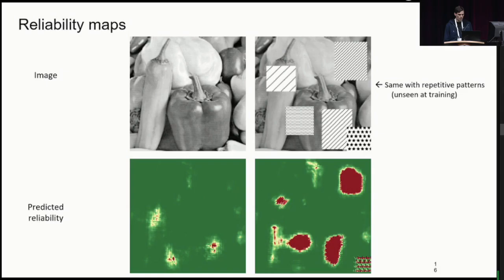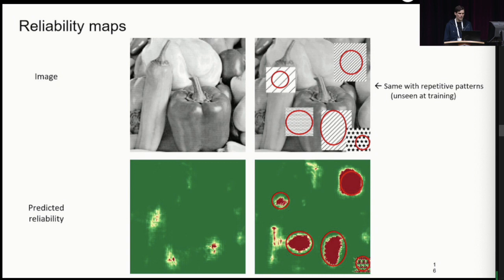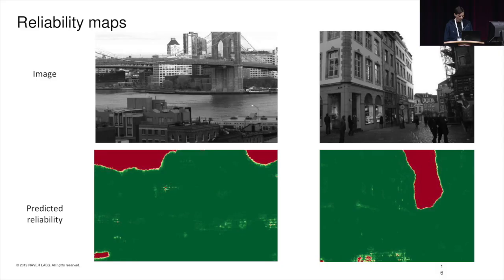Here we show an example where we printed repetitive patterns on top of an image, and below we show the corresponding reliability heat maps estimated by our network. As you can see, these regions are deemed as totally unreliable, even though our network has never seen such patterns at training time. On real images, the sky is predicted as totally unreliable, which makes sense. The river is also found not so reliable because it's composed of 1D patterns mostly. Repetitive patterns like pavement or building windows are also discarded to some extent. Here we overlay the top-scored keypoints as green crosses over the images, and you can see that they tend to avoid unreliable regions.